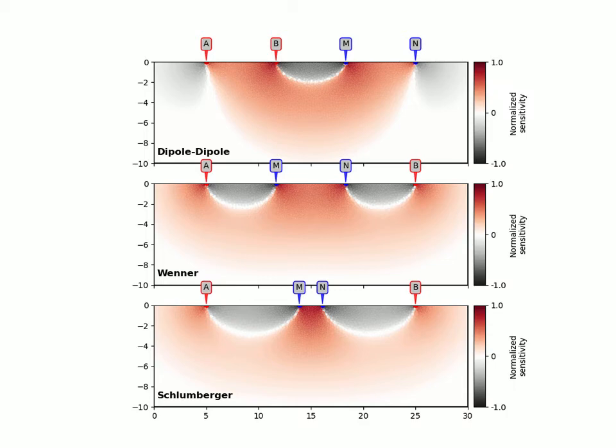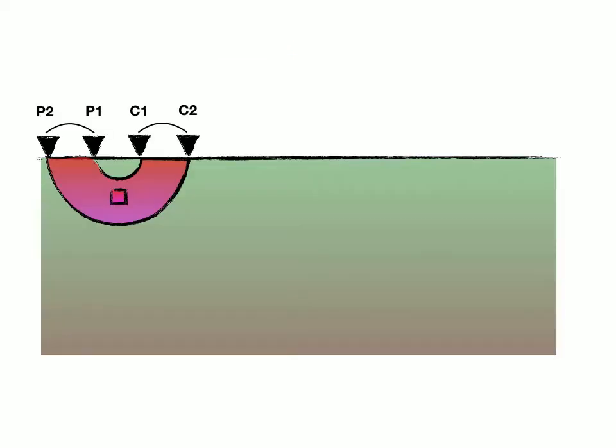Now, for other different types of resistivity arrays, and I've shown a few other examples just here, you get different shaped resistivity combinations. They're sensitive to different layers and different depths. Dipole-dipole does quite well looking deeper into the ground.